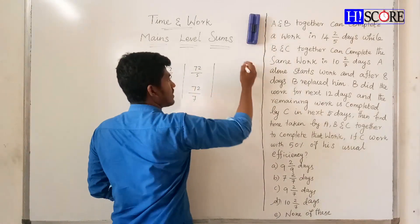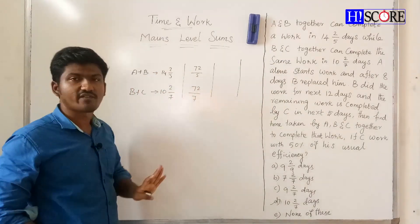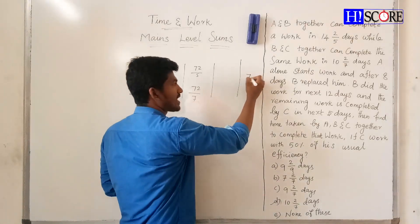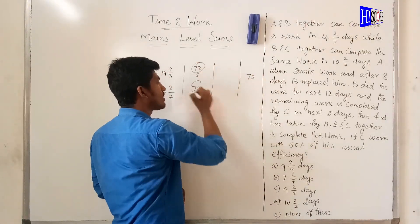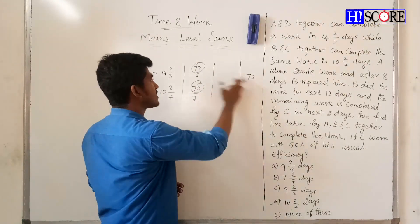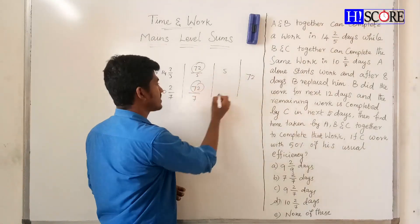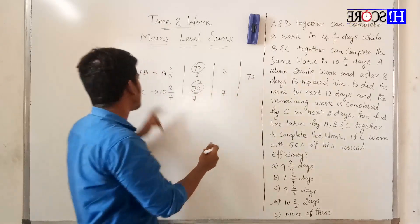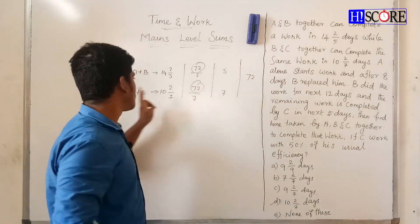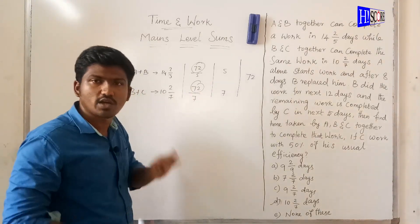The total work is 72 units. A and B together do 5 units per day, and B and C together do 7 units per day. We will use 72 as the total unit of work.